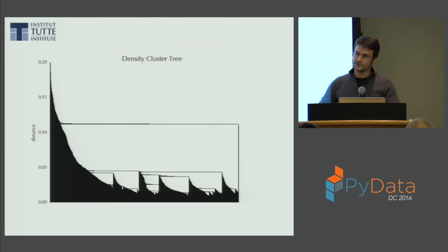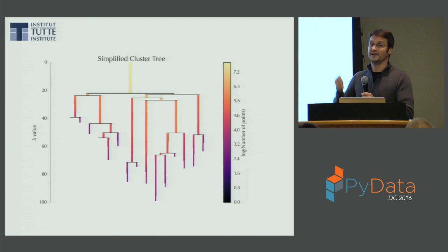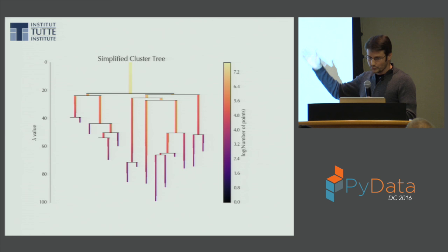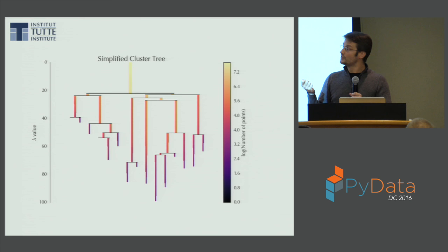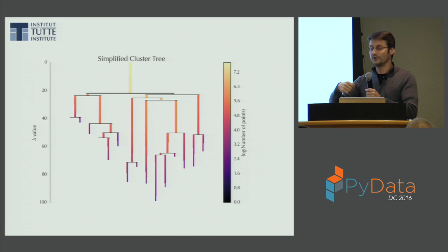After simplification, the condensed tree is something you can actually look at and understand. The width of each branch is related to the number of points. You can see points falling out of clusters as you go down the page. To pick out a flat clustering, you effectively maximize the amount of ink — subject to the constraint that if you choose a cluster, you can't choose any of its children. You work through and choose clusters that maximize the excess of mass.